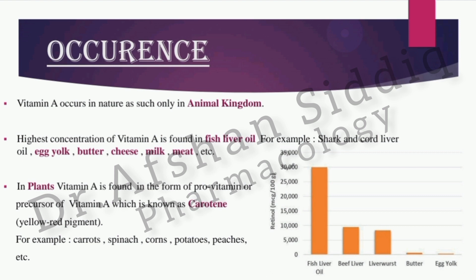In plants, vitamin A is also found but in a pro-vitamin form — it is not the active one. The pro-vitamin form present in plants is carotene, specifically beta-carotene. It is found in all those vegetables and fruits which are colored.